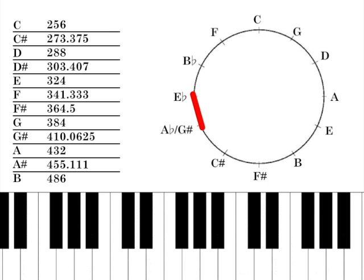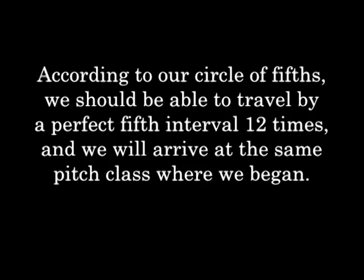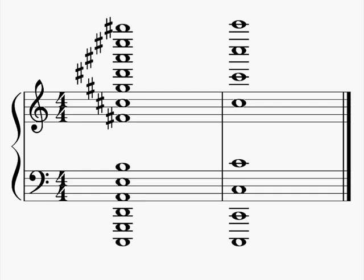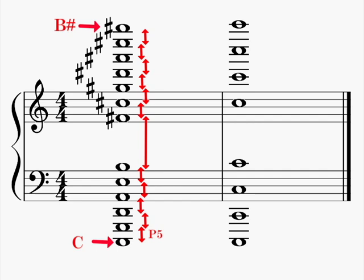According to our circle of fifths, we should be able to travel by a perfect fifth interval 12 times, and we will arrive at the same pitch class where we began. Observe. On the left is a stack of 12 fifths starting on a very low C and ending on a very high B sharp, which, because of the circle of fifths, we assume to be enharmonic or equivalent to C. On the right is a stack of 7 octaves spanning the same distance.